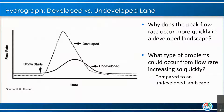Now we're going to move on to a hydrograph — basically the measurement of water flow over time. We have developed land shown by the dotted line and undeveloped by the solid line. During a rainstorm, in a developed landscape, the peak flow is reached very, very quickly and is much higher than the peak flow in an undeveloped landscape. In an undeveloped landscape, flow gradually hits the peak and then gradually goes down, whereas in a developed landscape it happens very quickly and then also drops very quickly.